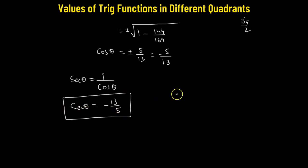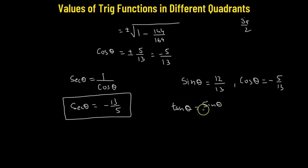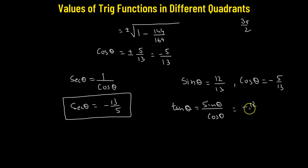Next, we need the value of tangent theta. We are given sine theta equals positive 12 over 13, and we obtained cosine theta equals negative 5 over 13. To find tangent theta, we take sine divided by cosine, because that's the definition of the tangent function. So 12 over 13 divided by negative 5 over 13 gives us negative 12 over 5. That is the value of tangent theta.